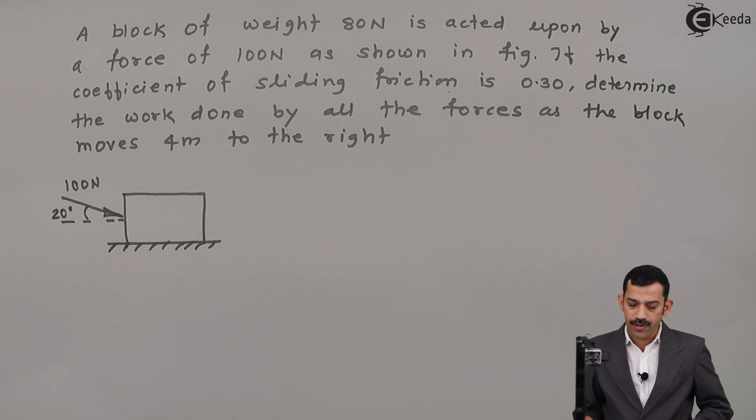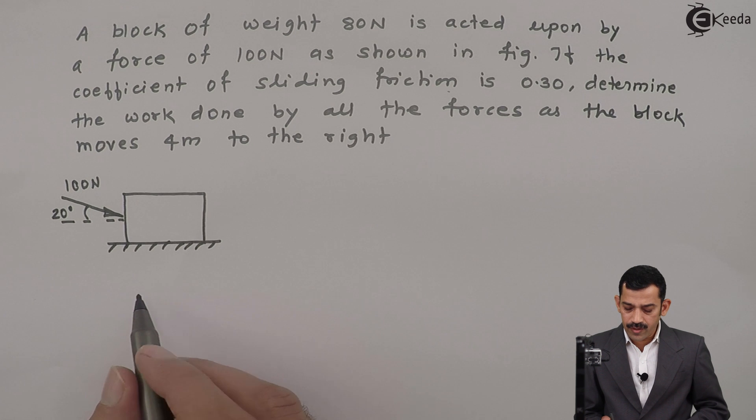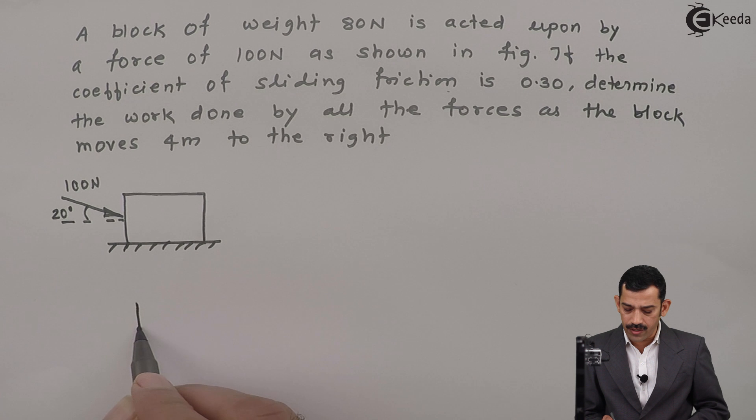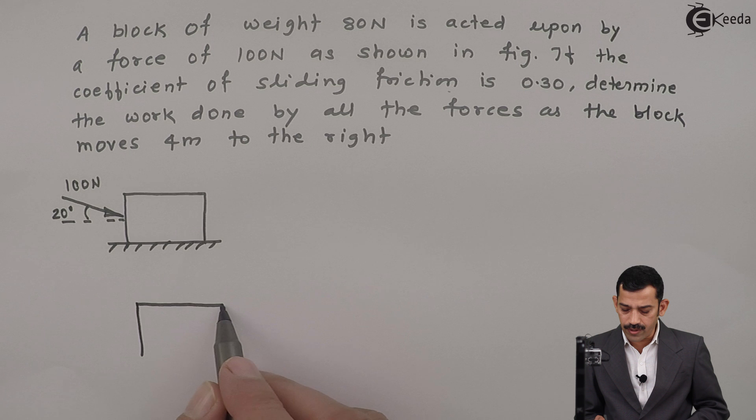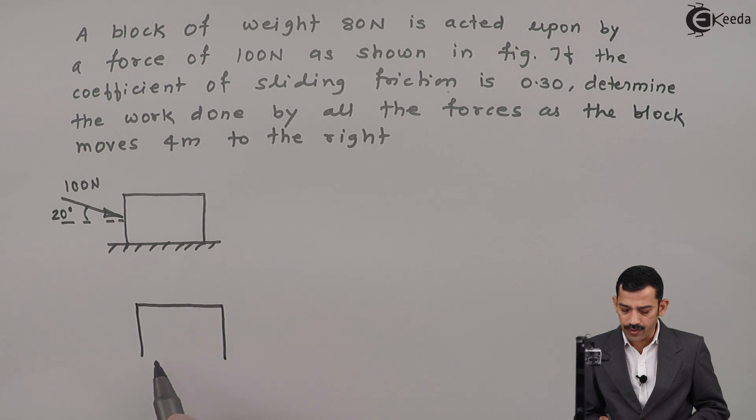First of all, we will draw the free body diagram of the given block. After removing support or separating the body from its restriction, you will get the free body diagram. So this one is the block.